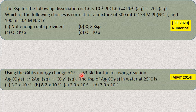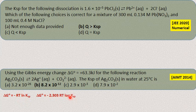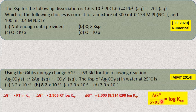Next question from APMT: ΔG° = +63.3 kJ for a given reaction. Find Ksp at 25°C. Use the formula ΔG° = −RT ln Ksp. Convert to log base 10 by multiplying by 2.303. With T = 298 K and R = 8.314 J/K/mol, the product 2.303 × 8.314 × 298 = 5705.8. So log K = ΔG° / 5705.8. Find the negative value and take the antilogarithm to get Ksp.